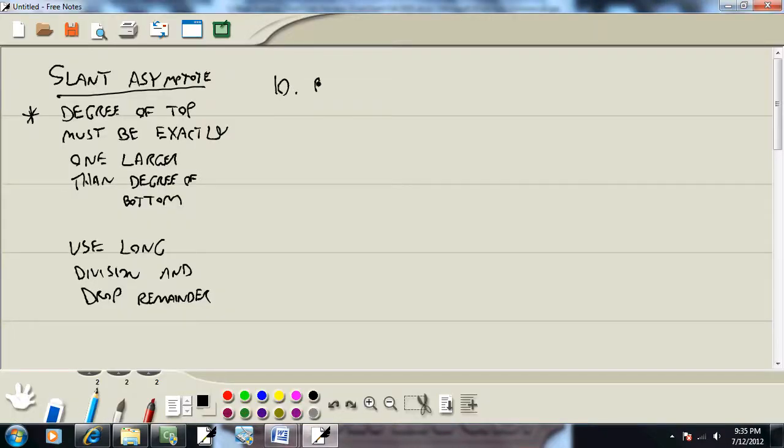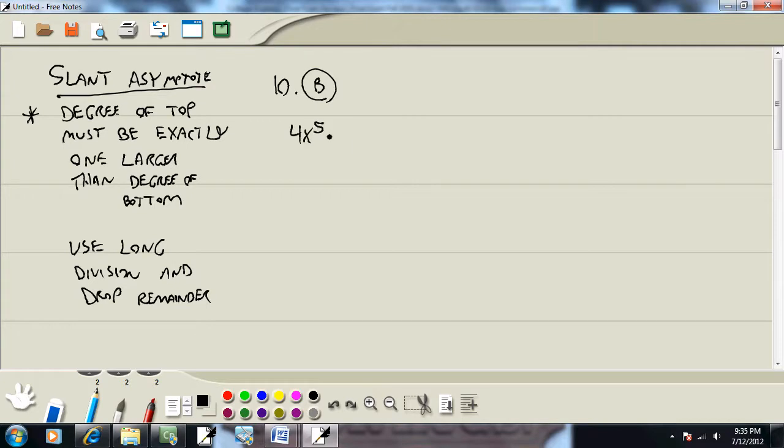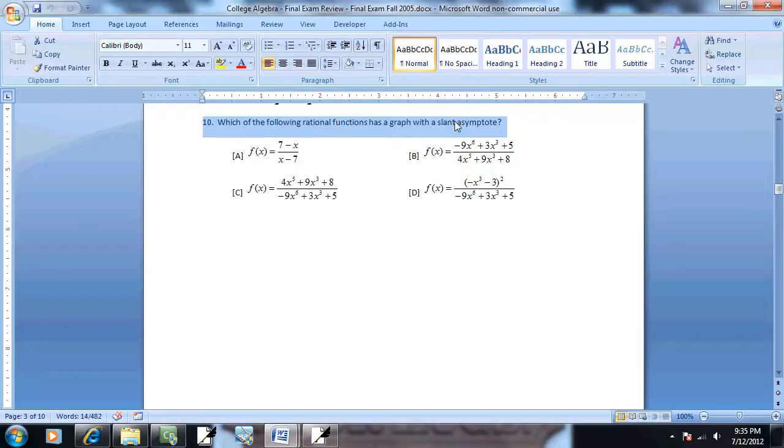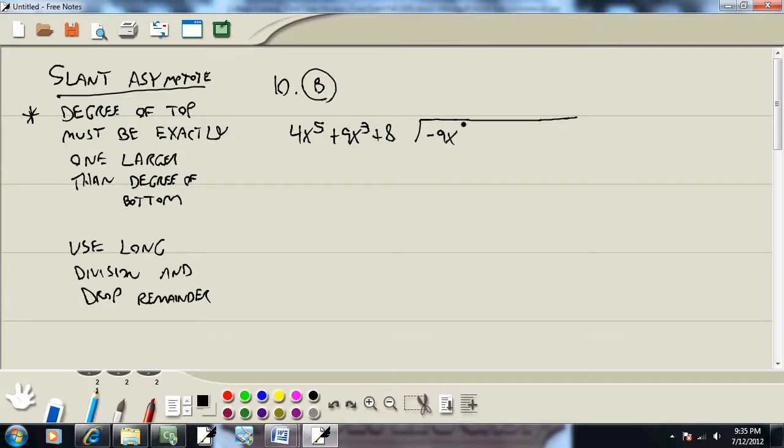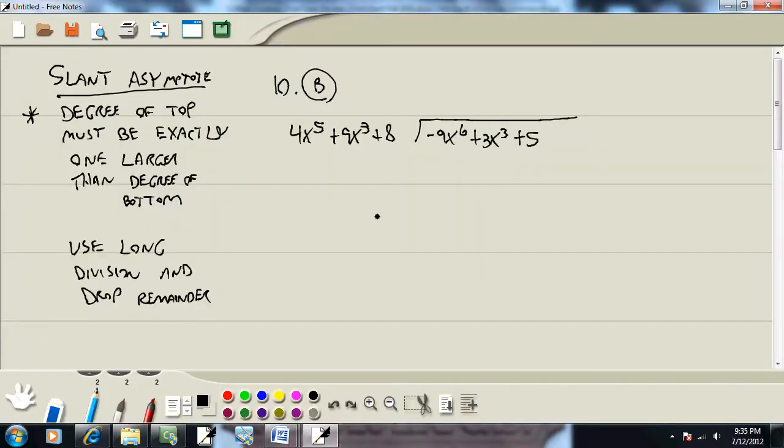Now I'm going to find our slant asymptote to show it. So we've got 4x to the fifth plus 9x to the third plus eight, and dividing that into negative 9x to the sixth plus 3x to the third plus five. Now for long division to work out smoothly, it has to be in standard form, and if you're missing any powers, you should put zero placeholders.